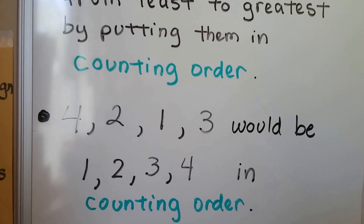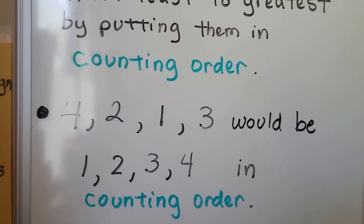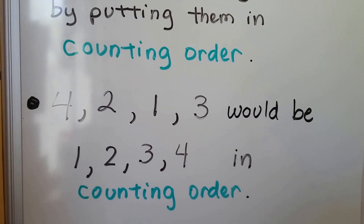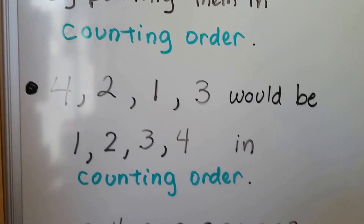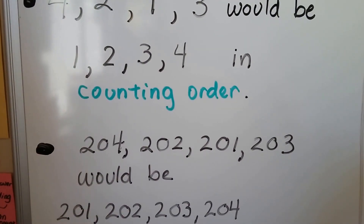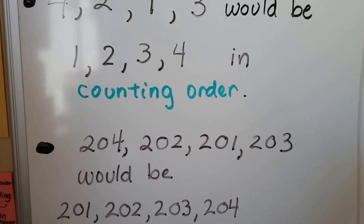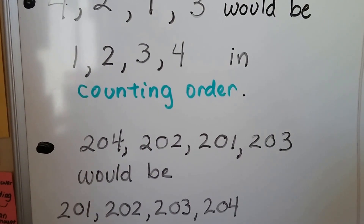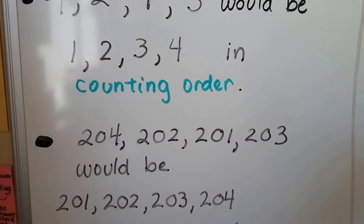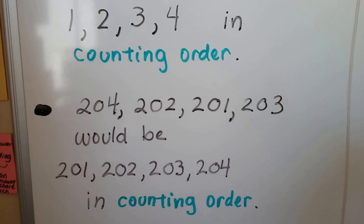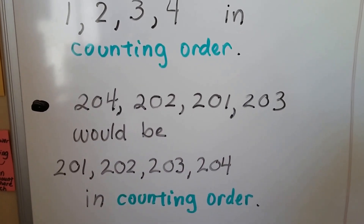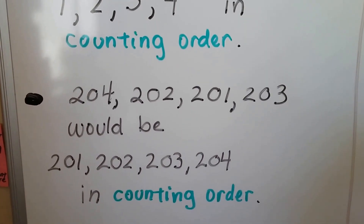If we see 4, 2, 1, 3, well that would be 1, 2, 3, 4 in counting order. If we saw 204, 202, 201, 203, it would be 201, 202, 203, 204 in counting order, wouldn't it?